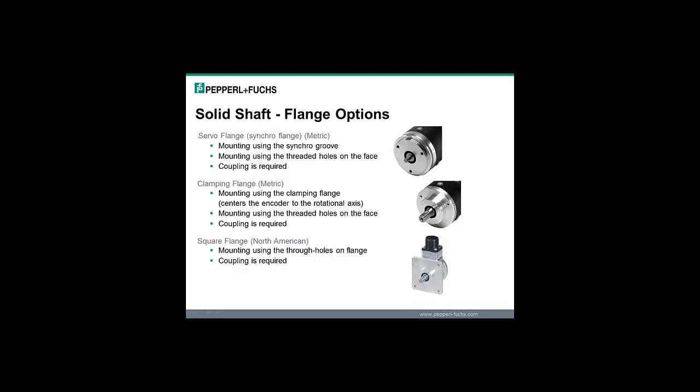The flange options for the solid shaft are servo flange, which could also be called synchro flange, clamping flange, and square flange. Each flange type has different mounting options. The clamping flange and square flange are more common in the US. The servo flange is more common in Europe.